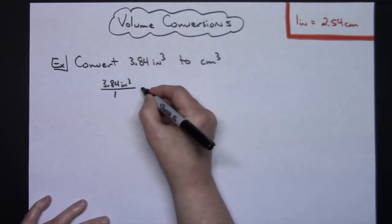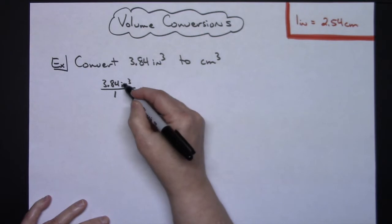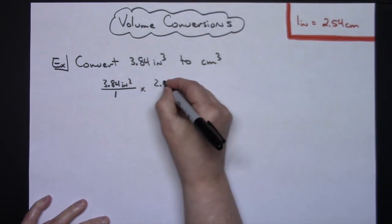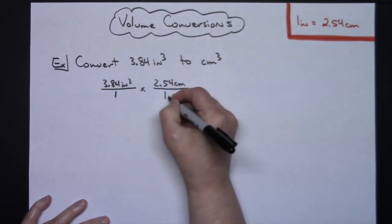All right, now I need to, in unit analysis, you multiply by your conversion factor. Inches is in the top so I want inches in the bottom, so I'm going to take this 2.54 centimeters over one inch.